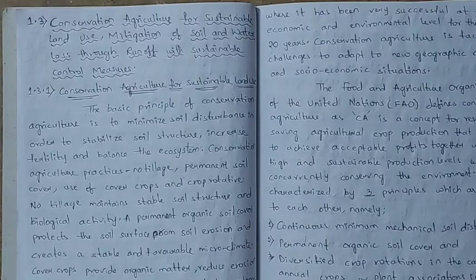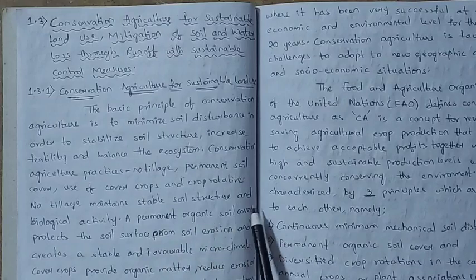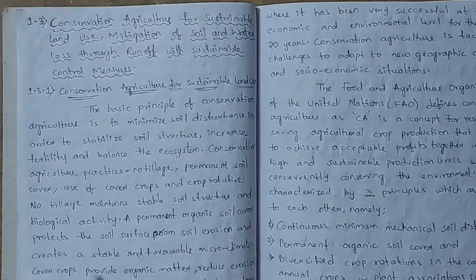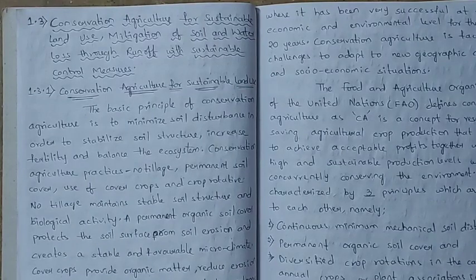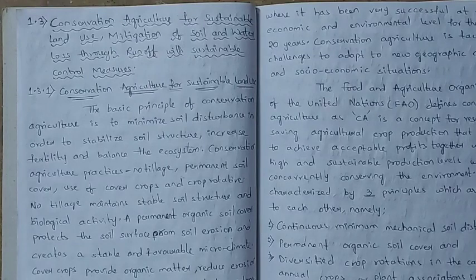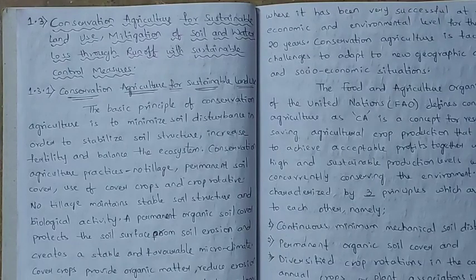Next, permanent organic soil cover protects the soil surface from soil erosion and creates a stable and favorable microclimate. So permanent soil cover reduces soil erosion and also creates a stable and favorable microclimate for the soil.